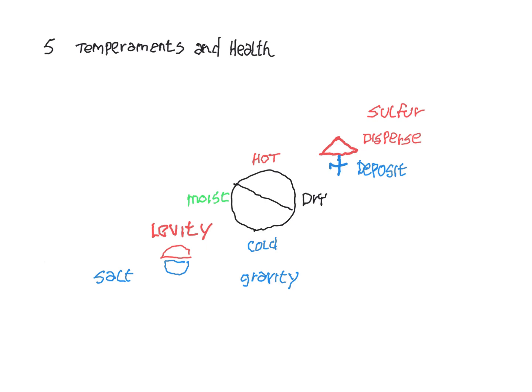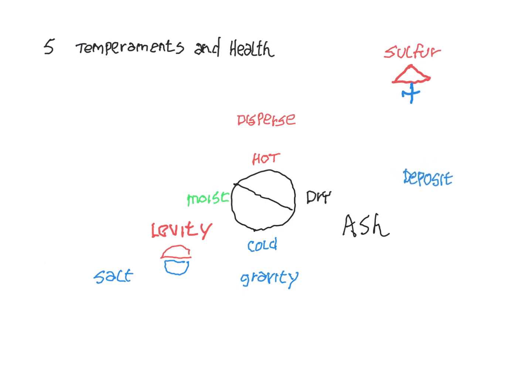The dryness in the levity state, we'll put the dry down here, is the source of a deposit of something that the alchemists had a special term for. And they called that ash. Ash is deposited in a sulfur reaction when the fire burns completely and dries something out and then combusts it. And then what's left is an ash. So in a sulfur condition, the dispensing and the depositing end up with a solid ash.